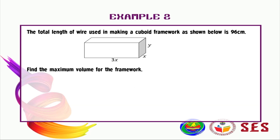Hello and Assalamualaikum everyone. In this video we are going to discuss example two — I believe you have already tried doing this on your own. The first step is to identify the variable that needs to be maximized or minimized. The keyword here is 'maximum' and 'volume', so we have V equal to length times width times height, which gives us 3x times x times y.